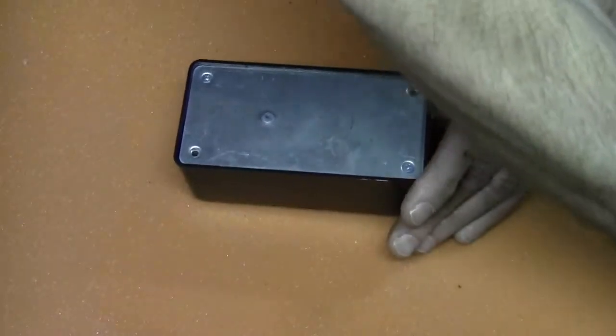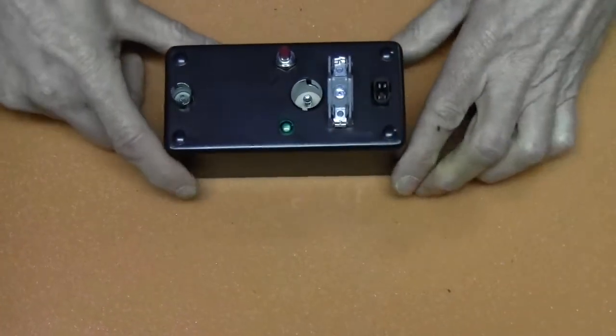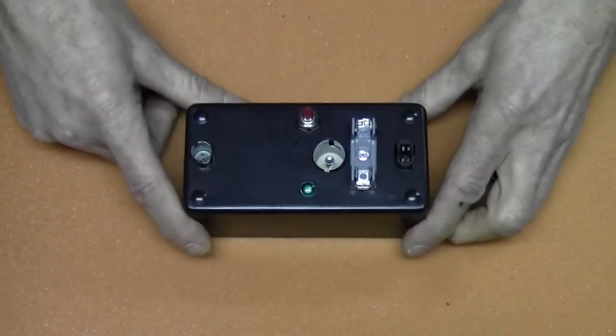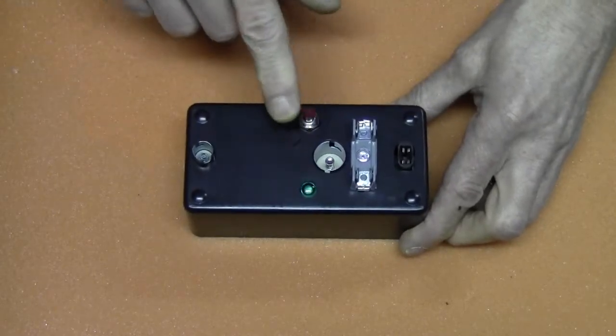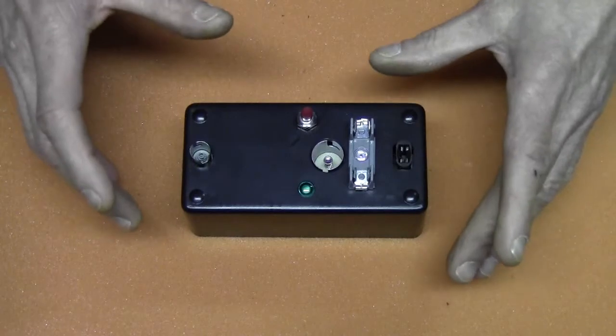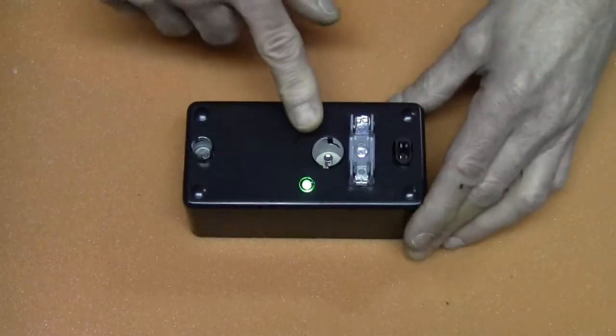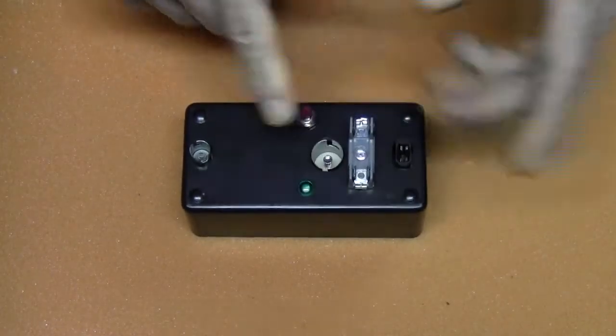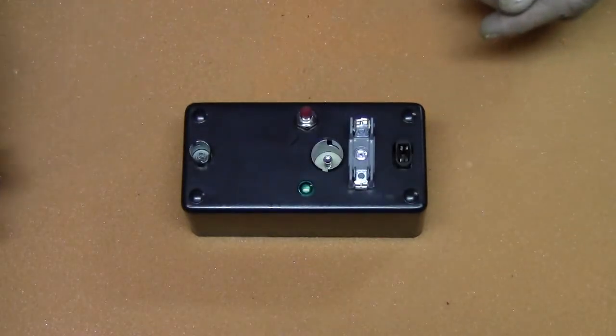So this unit should be ready to go. So what we have here is this little momentary switch here. What that is, is that's simply a battery test. This is so when you go to grab the unit that you don't have to wonder whether your battery is good or not. You hit that, your green LED lights, your battery is good, you're ready to test.